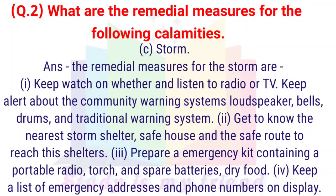Answer: The remedial measures for storms are: 1. Keep watch on weather and listen to radio or TV. 2. Keep alert about the community warning systems such as loudspeakers, bells, drums, and traditional warning systems. 3. Get to know the nearest storm shelter and the safe route to reach it. 4. Prepare an emergency kit containing a portable radio, torch and spare batteries, and dry food. 5. Keep a list of emergency addresses and phone numbers on display.